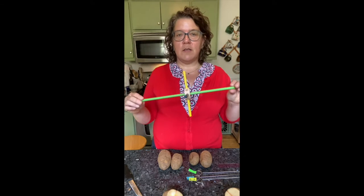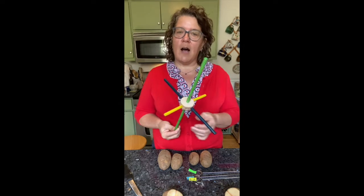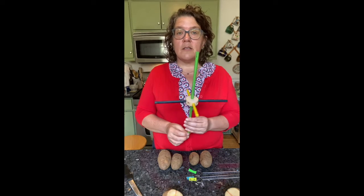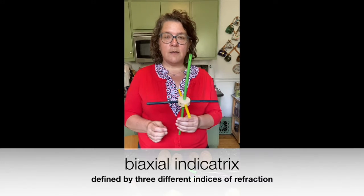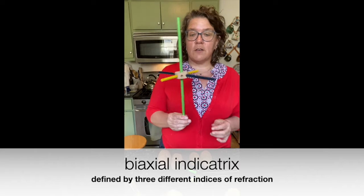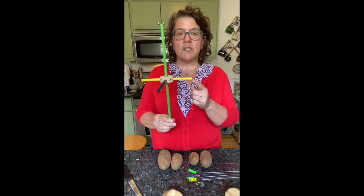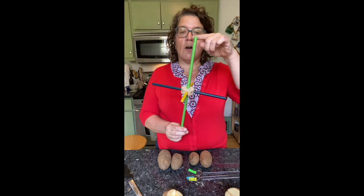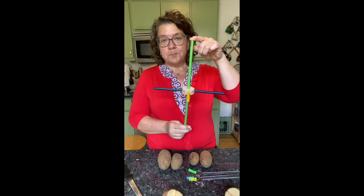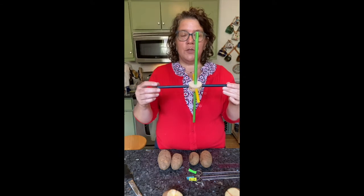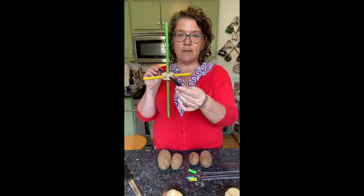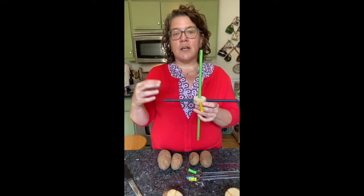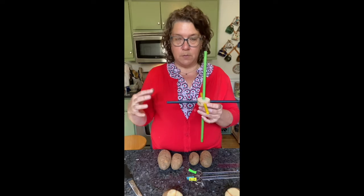Some of you may know these — they are little wooden rods and connectors. To construct a biaxial indicatrix, we need three different color tinker toys: a short one, which is the yellow here; an intermediate one, which is the blue one here; and a long one, which is the green one. So three unique axes, three different length axes, which represent the indices of refraction that light sees as it goes through the mineral.